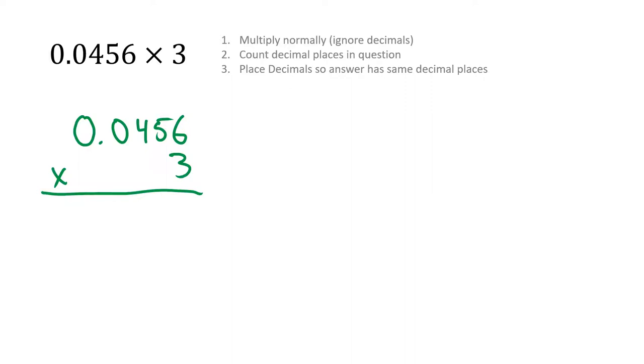3 times 5 gives us 15, plus 1 is 16. Carry the 1. 3 times 4 is 12, plus 1 gives us 13. Carry the 1. 3 times 0 is 0, plus 1 is 1. If we kept going, 3 times 0 is just 0. So I can put another 0 there. We've multiplied normally, ignoring the decimals.